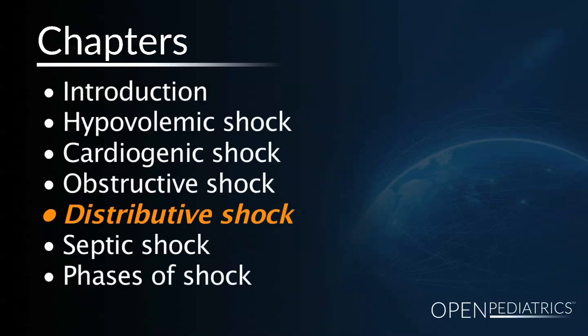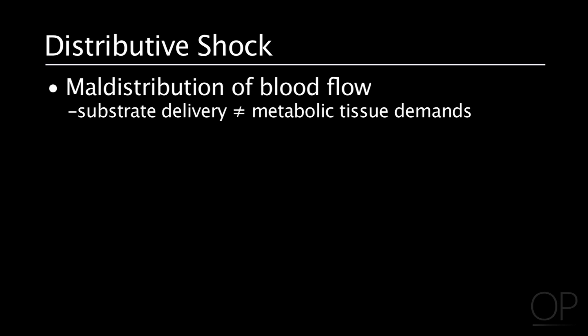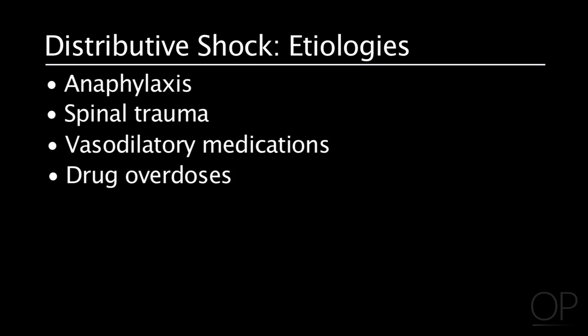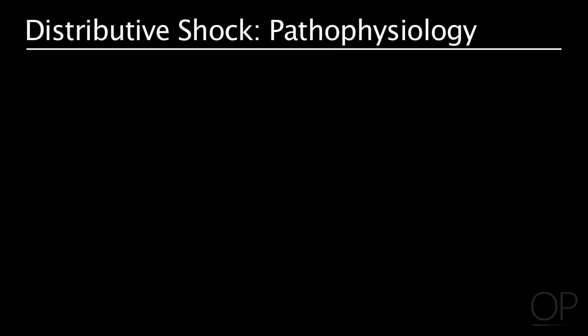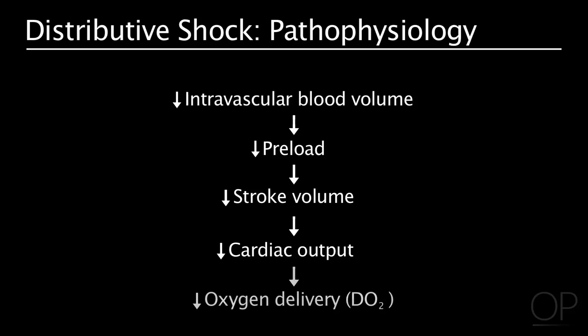Distributive shock is a maldistribution of blood flow, which again results in inadequate substrate delivery to meet the metabolic demands of the tissue. Etiologies include anaphylaxis, spinal cord trauma or surgeries, vasodilatory medications, and sometimes drug overdoses. The pathophysiology is very similar to hypovolemic shock — there's vascular dilation and an inadequate amount of blood volume to adequately perfuse the organ bed — resulting in decreased preload, decreased stroke volume, decreased cardiac output, and ultimately decreased oxygen delivery.